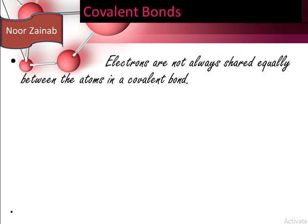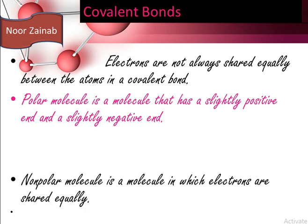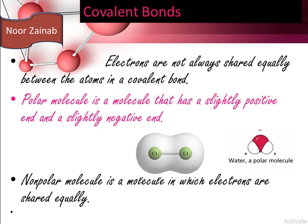Electrons are not always shared equally between the atoms in a covalent bond. A polar molecule is a molecule that has a slightly positive end and a slightly negative end. A non-polar molecule is a molecule in which electrons are shared equally. For example, water is a polar molecule.